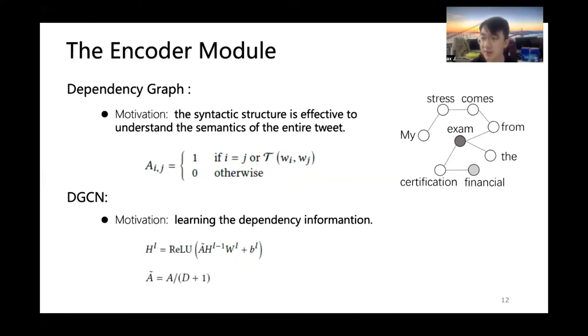Thus, we construct the syntactic dependency graphs to better obtain text score representations. A dependency graph example is illustrated for the tweet: 'My stress comes from financial certification exam in the future.' There are two stress category related words, exam and financial in the tweet. Through the dependency graph, it will be easier to understand that the stress is from exam. Thus, we construct the dependency graph for each tweet and leverage the dependency graph convolutional neural network to learn the dependency information.